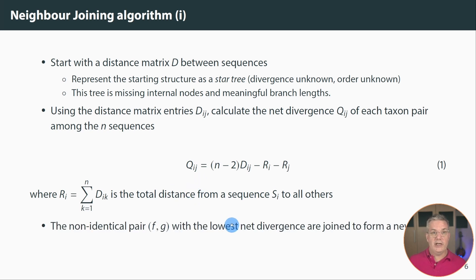Then we find whichever non-identical pair. So we ignore the diagonals. We find the off-diagonal elements that have the smallest value. These are usually negative values. And they are joined to form a new node. And we'll call that new node u in this process. Okay, that's the first part of the algorithm.